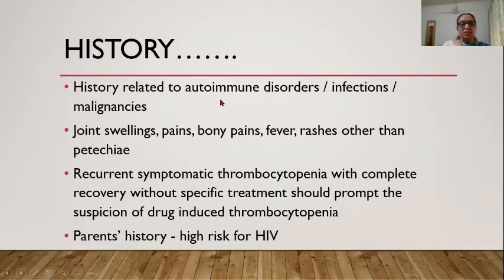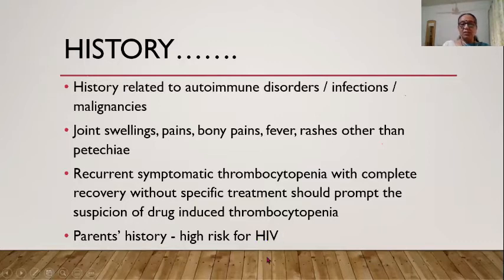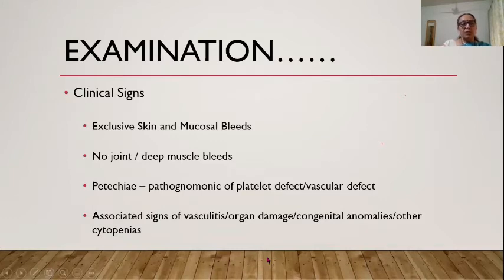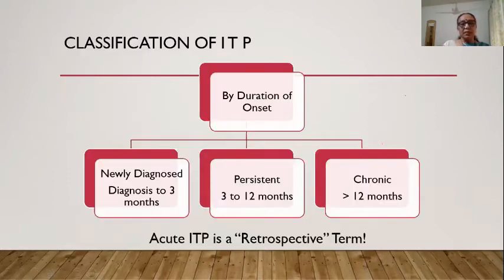History should include questions about autoimmune disorders, infections, malignancies — joint swellings, bony pains, fever, rashes. Recurrent symptomatic thrombocytopenia with complete recovery without specific treatment should prompt suspicion of drug-induced thrombocytopenia. Parents' HIV risk history should always be taken. Clinically, look for skin and mucosal bleeds, petechiae, and associated signs of vasculitis or organ damage that suggest secondary ITP.